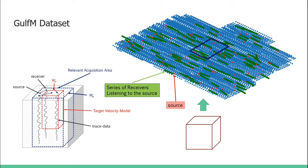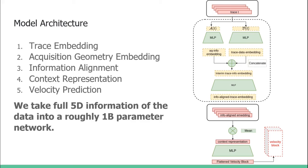Here we introduce the model architecture. We first generate trace and acquisition geometry embeddings separately, then we align them through our MLP network to generate the context representation. Finally, we use the context representation to predict velocities. We take full 5D information of the data into roughly 1 billion parameter network, and this model can scale up to 60 or 70.